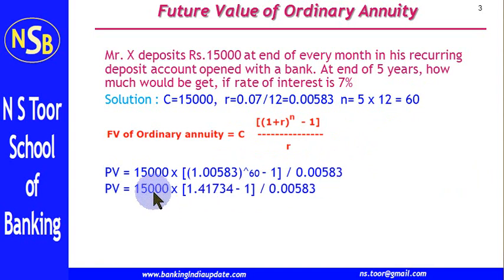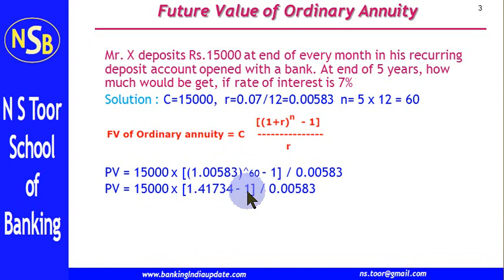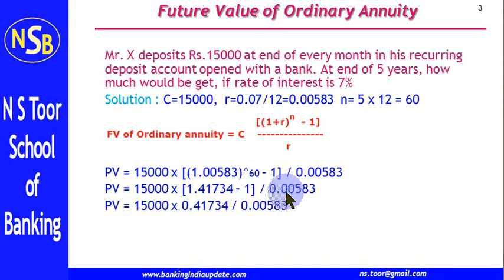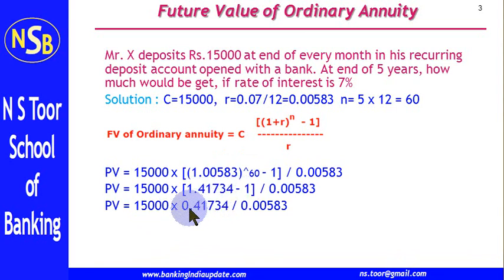So we have 15,000, and we calculate the value of the bracket raised to the power 60. Solving it gives us 1.41734. Subtracting 1 gives 0.41734, which is then divided by the monthly rate of interest.